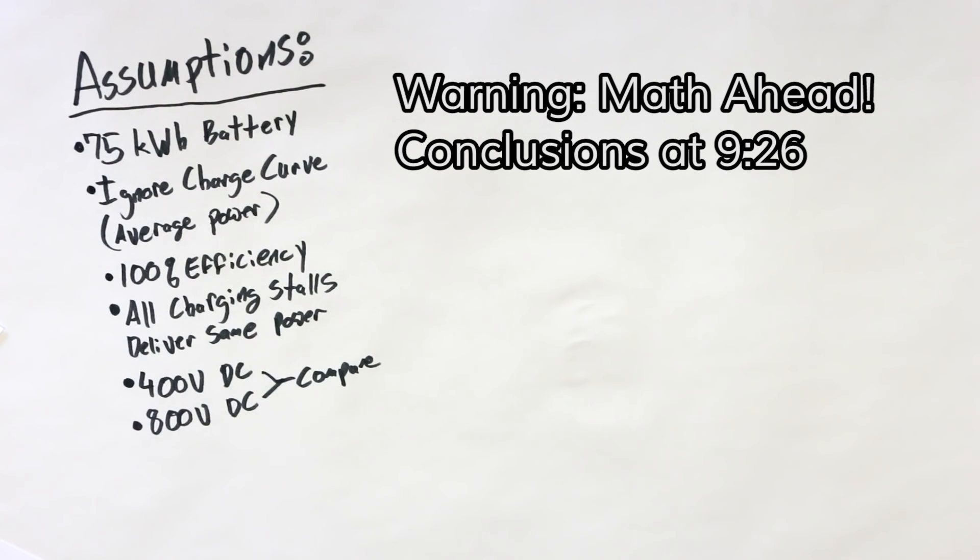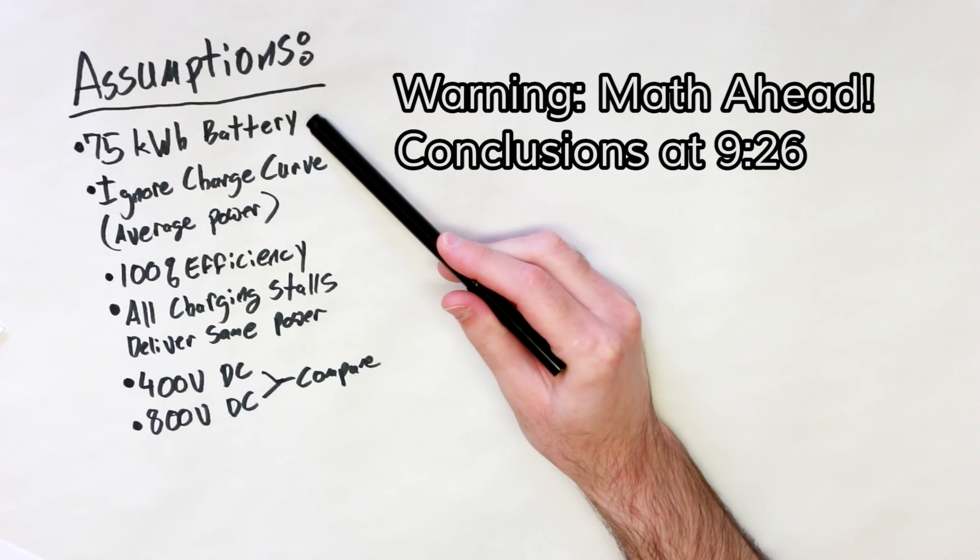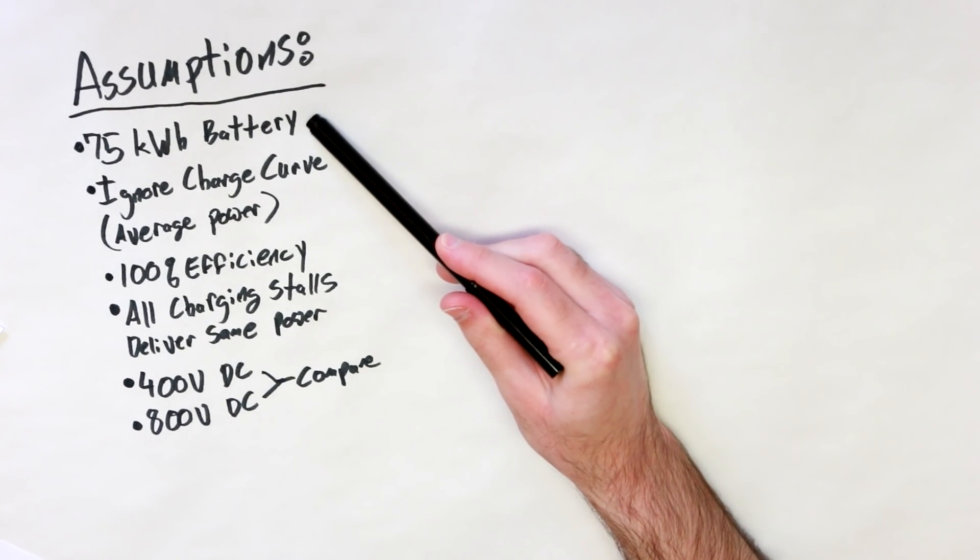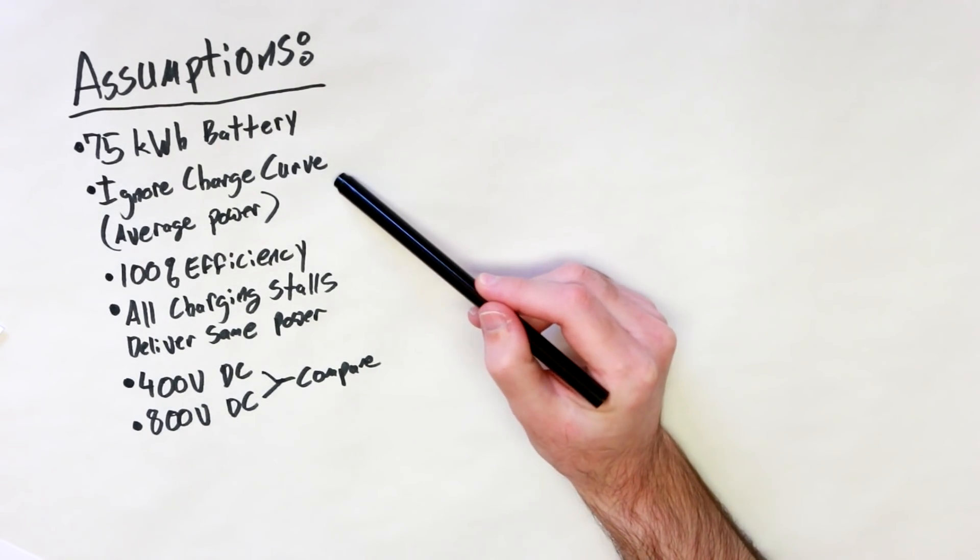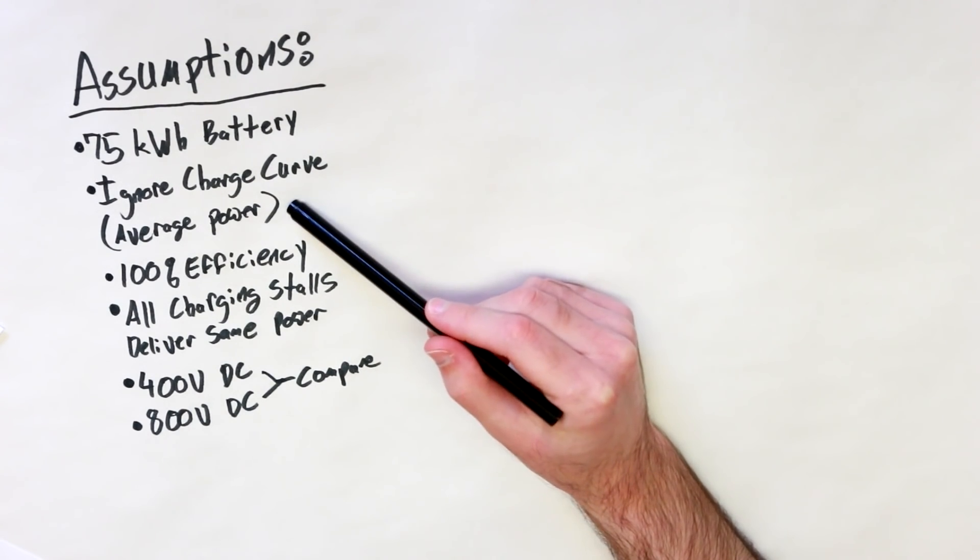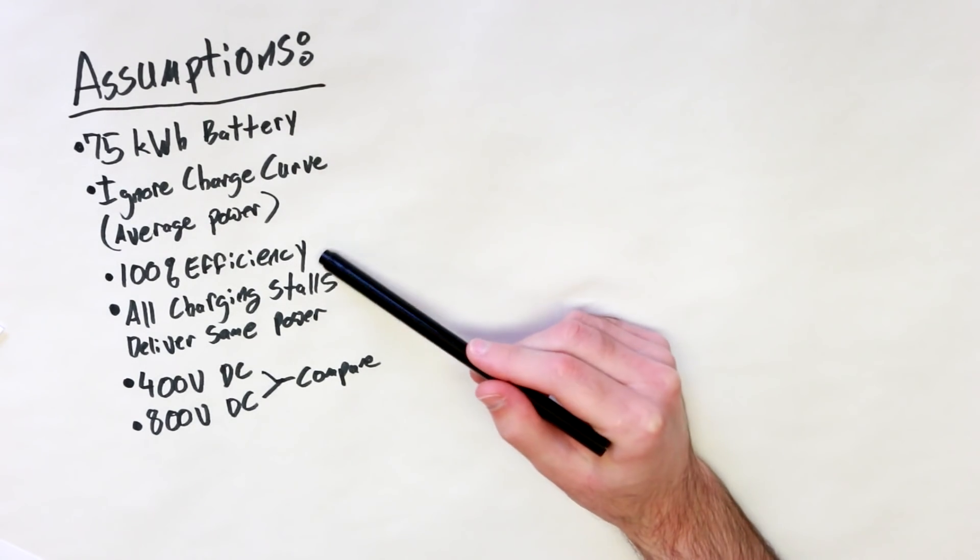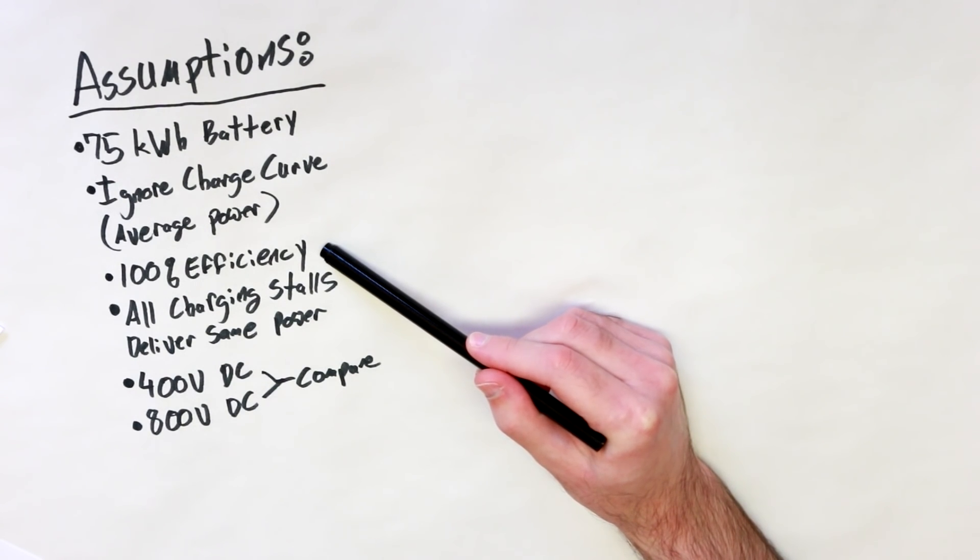First, let's go over the assumptions that I'm using to set up this hypothetical. I'll be assuming a car with a 75 kilowatt hour battery, that's 75 kilowatt hours usable, and of a chemistry that can accept whatever amount of power we decide to throw at it. I'll be ignoring the charge curve phenomenon that occurs with lithium chemistry batteries, so I'll be talking about average power rather than the peak power which occurs early in the charge cycle and then gradually declines.